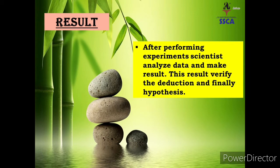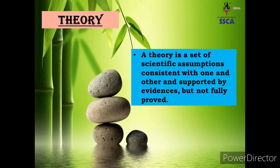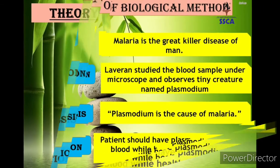After experimentation, the next step is making the result by obtaining and analyzing data. Finally, result verifies the deduction and hypothesis. The last step of biological method is theory. A theory is a set of scientific assumptions consistent with one another and supported by evidences but not fully proved. जितने ज़्यादा evidences उस hypothesis से relate करते जाएंगे, वो acceptable होंगे, और finally वो theory form में represent किए जाते हैं — जैसे theory of evolution।